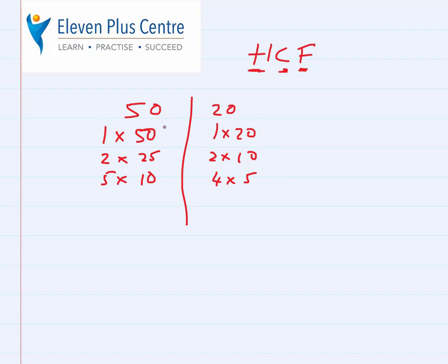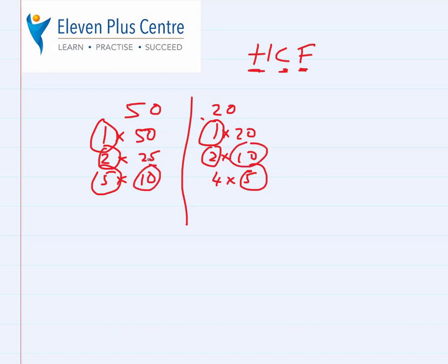Now let's find the common factors of 50 and 20. 1 is in both, 2 is in both, 5 is in both, and 10 is in both. 20, 25 are not common. So the common factors are 1, 2, 5, and 10. We want the highest one — and the highest is 10. Therefore, the highest common factor of 50 and 20 is 10.